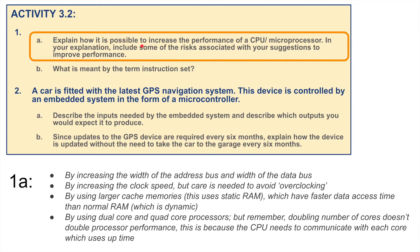Explain how it is possible to increase the performance of the CPU microprocessor, and include some of the risks associated with your suggestions to improve performance. We could increase the width of the address bus and the width of the data bus. We could increase the clock speed, but we need to be careful that increasing the clock speed could cause overclocking.